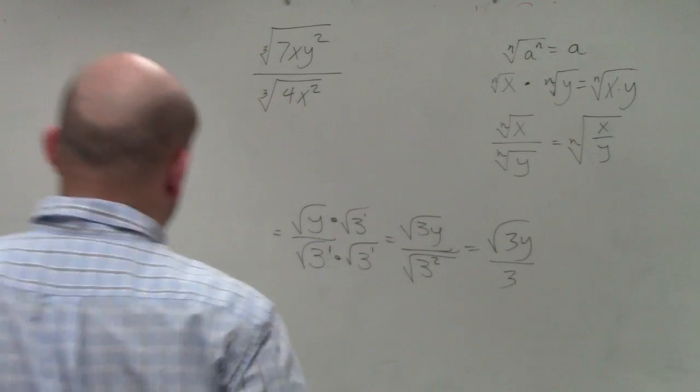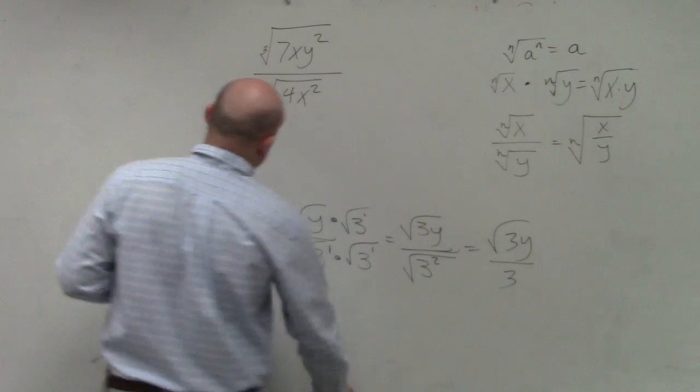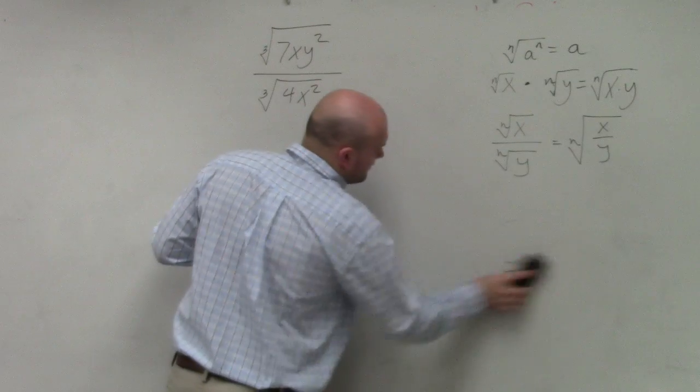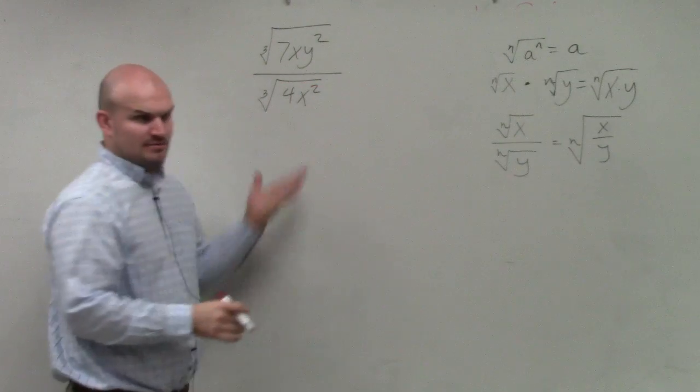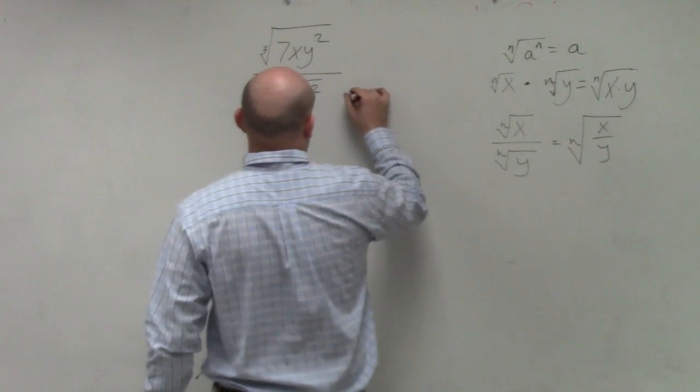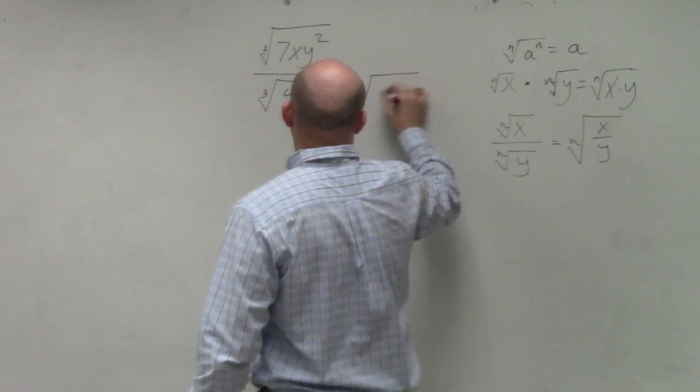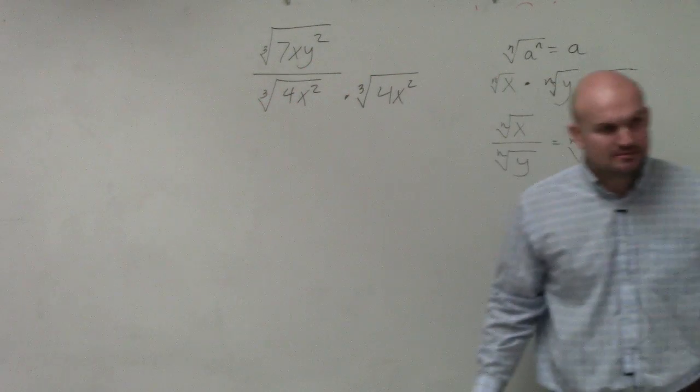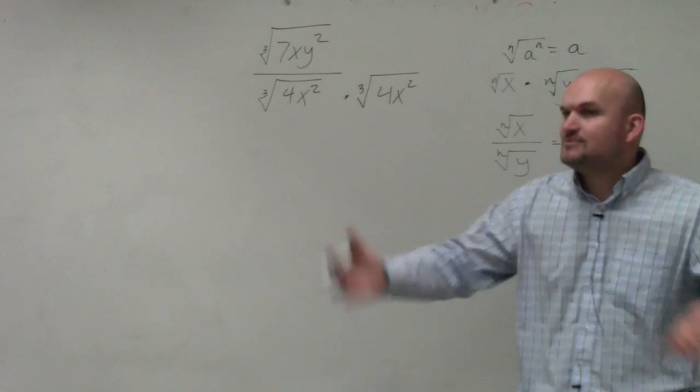Problem like this. And they say, oh, well, in the last problem, all I did was multiply by the radical of my denominator, right? So I'd do the same thing. Multiply by the cube root of 4x squared. That would make sense. That's what we did in the last problem.